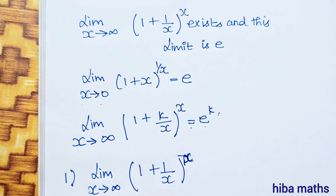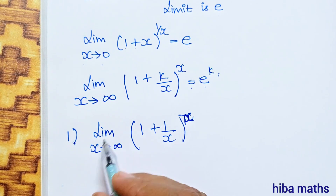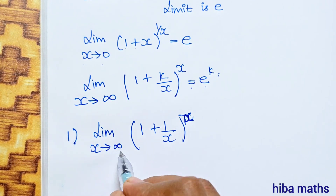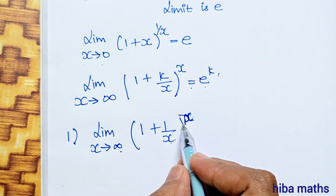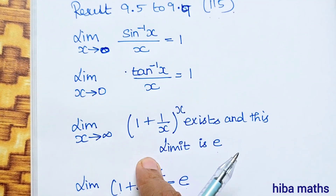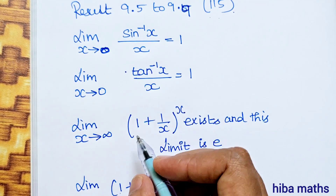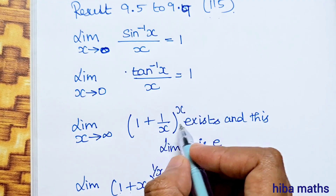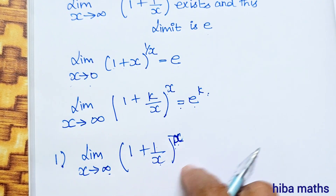First question: Limit x turns to infinity, 1 plus 1 by x, power 7 into x. This is the case of limit x turns to infinity, 1 plus 1 by x, whole power x, equal to e, so the power is 7 into x.